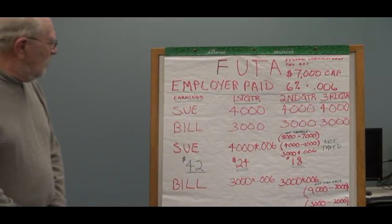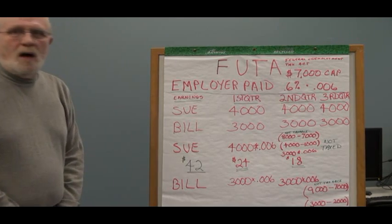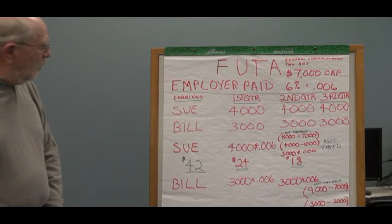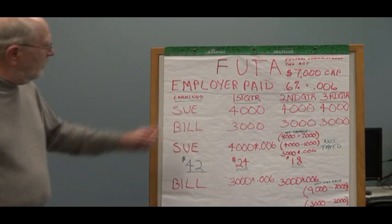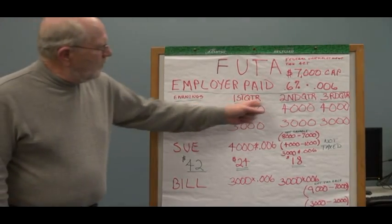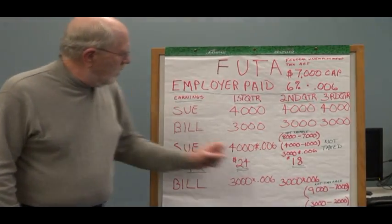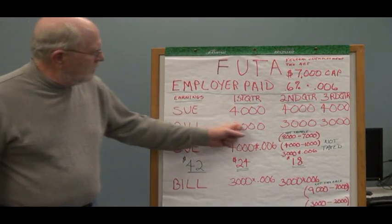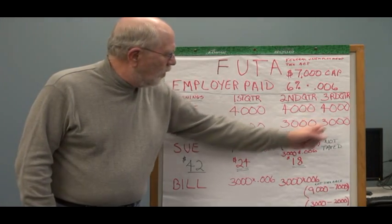I've got an example here of a couple of part-time people. One is named Sue, one is named Bill. Sue earns $4,000 in each quarter, and Bill earns $3,000 in each quarter.